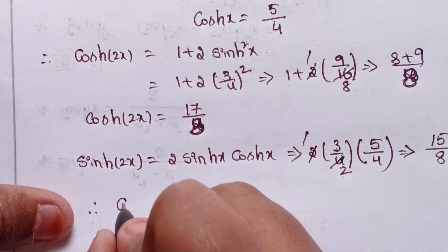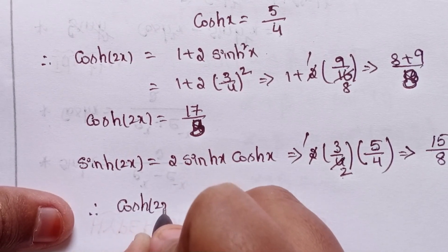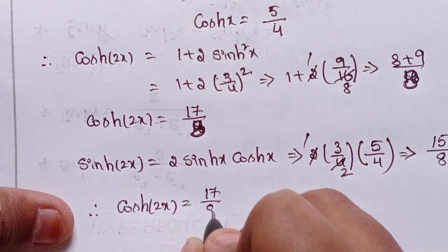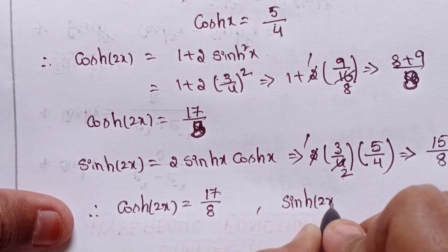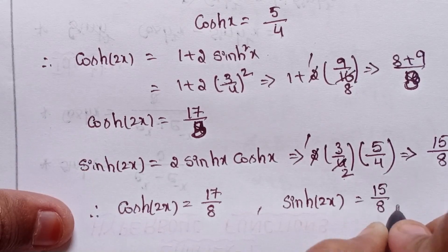Cosh of 2x is 17 by 8, and sinh of 2x value is 15 by 8.